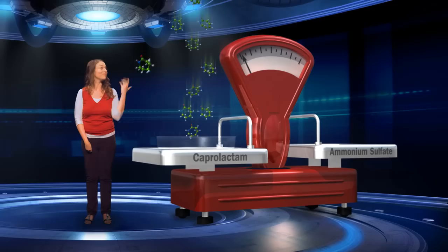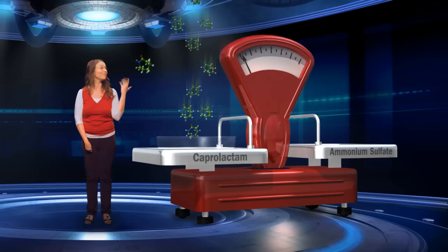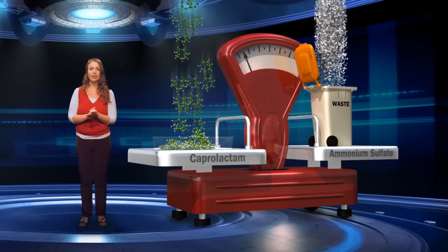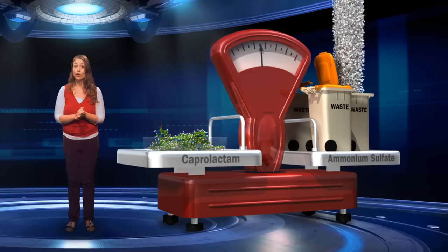The conventional uncatalyzed method to make these caprolactam building blocks produces a large amount of waste. Four million tonnes of caprolactam are used each year, just for nylon-6 production. But in the uncatalyzed process, for every one kilogram of the caprolactam produced, four kilograms of ammonium sulphate waste is also generated. This is not a sustainable process.